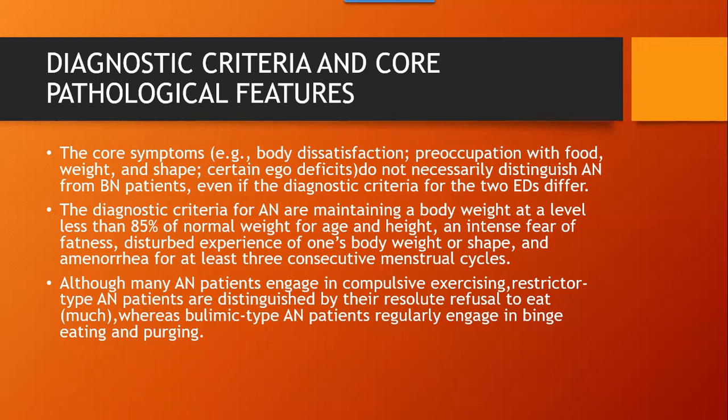Additional criteria for anorexia include a disturbed experience of one's own body weight or shape, and amenorrhea for at least three consecutive menstrual cycles. Although many anorexia patients engage in compulsive eating, restrictor-type anorexia patients are distinguished by their refusal to eat much, whereas bulimic-type anorexia patients regularly engage in binge eating and purging — essentially one is controlling and one is unable to control their urge.